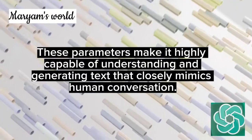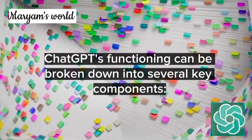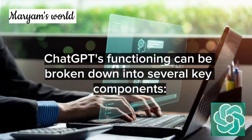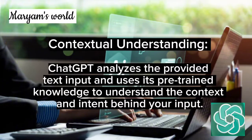How ChatGPT works: ChatGPT's functioning can be broken down into several key components. Text input — you interact with ChatGPT by providing it with text inputs. These inputs can be questions, statements, or prompts. Contextual understanding — ChatGPT analyzes the provided text input and uses its pre-trained knowledge to understand the context and intent behind your input.